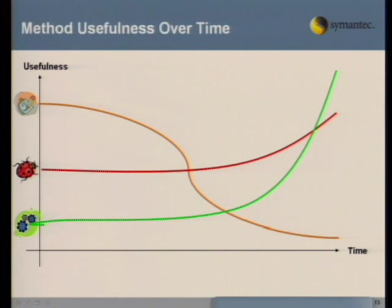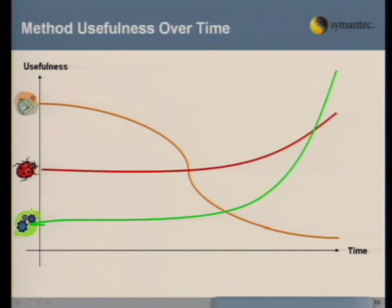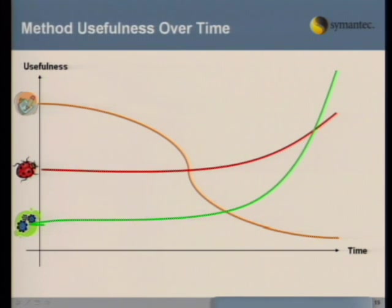This is how we view method usefulness over time. The requirements method is going to be useful early, because that's all you're going to have — at the very beginning, you won't have defects and you won't have many builds. However, as you gain more data with more builds and more defects, we think the other two methods will surpass requirements significantly, especially the build correlation method.